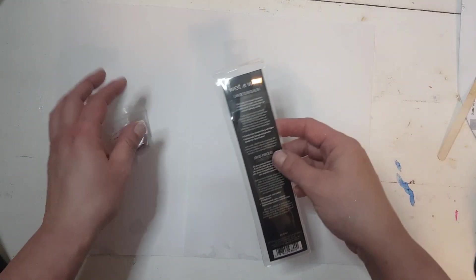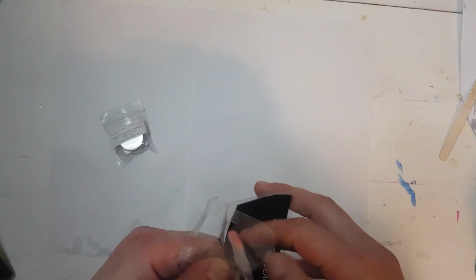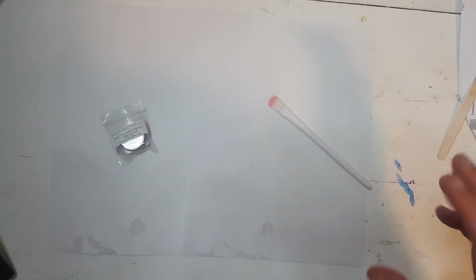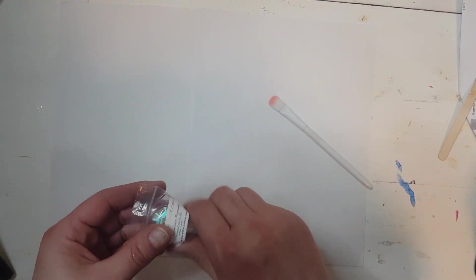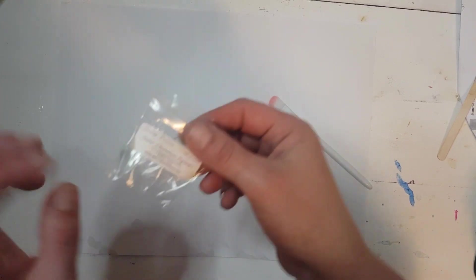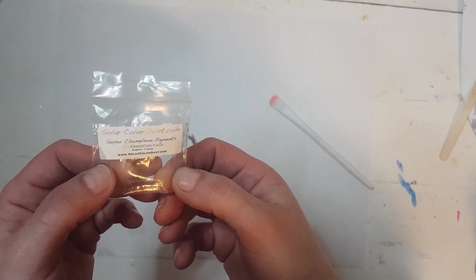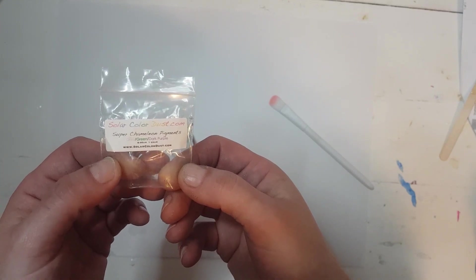Okay I'm going to grab my black cup in a minute but I'm going to open this up. Like I said I'm going to use a smaller makeup brush because I don't have a bigger like blush brush whatever. I don't do makeup. I don't really know makeup brushes. But again this is Solar Color Dust Super Chameleon Pigments Gray Green and Dark Purple.